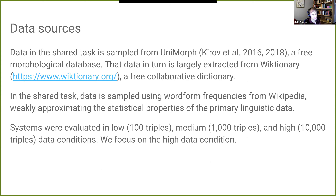The shared task data came from Unimorph for all target languages. Unimorph is a free, massively multilingual morphological database. That data is extracted from paradigm tables from Wiktionary, the free collaborative dictionary. The shared task data is sampled using word form frequencies from Wikipedia. Systems were evaluated in low, medium, and high data conditions. We focus on the high data condition because the systems worked terribly in low and medium conditions outside of a couple of easy languages.